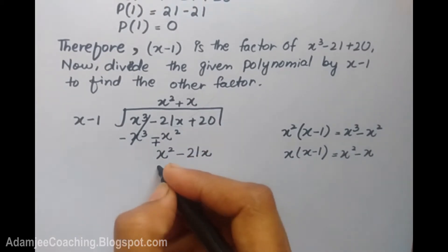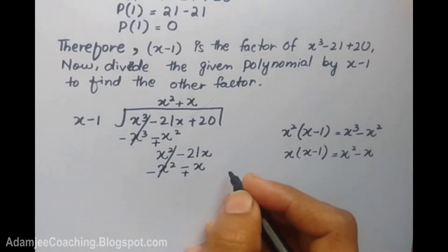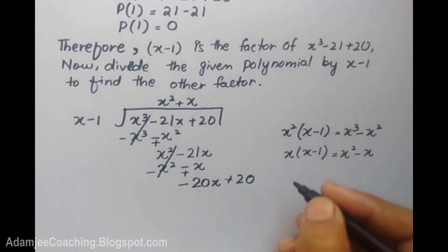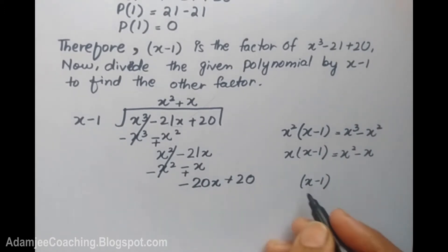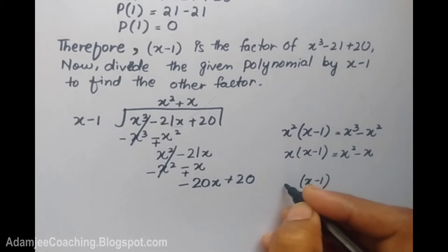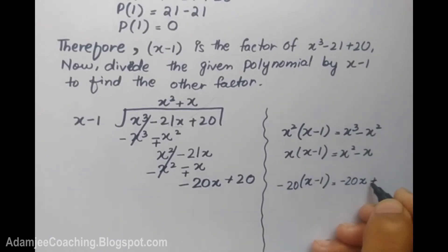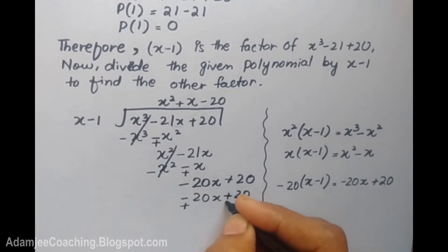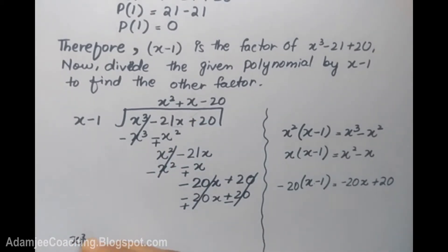We cancel this minus, and then it becomes plus. So we are doing from x and minus 21x, we take minus 20x. The sign is negative. Now I multiply minus 20x. When you cancel the sign — minus and minus becomes plus — we multiply minus 20x, and plus 21x. The result is 20x plus 20. We do the sign and then the remainder cancels, meaning it is a factor.